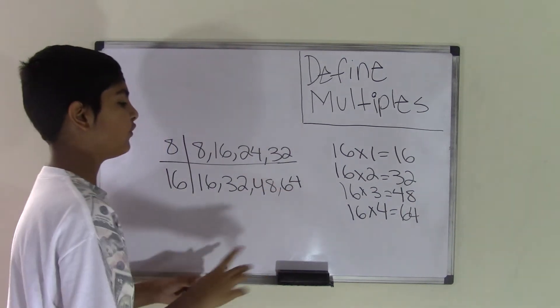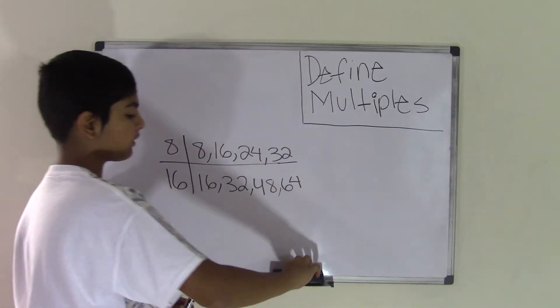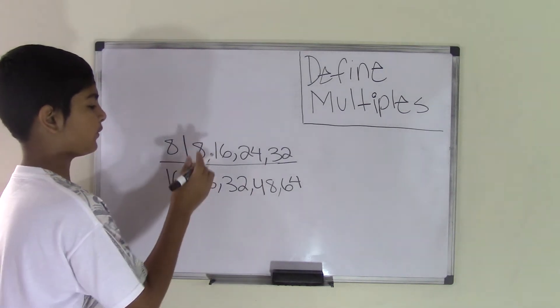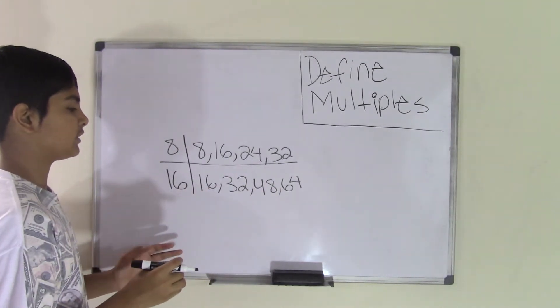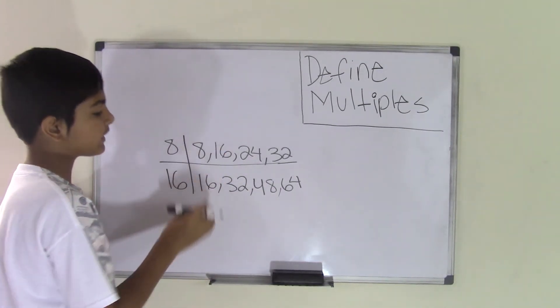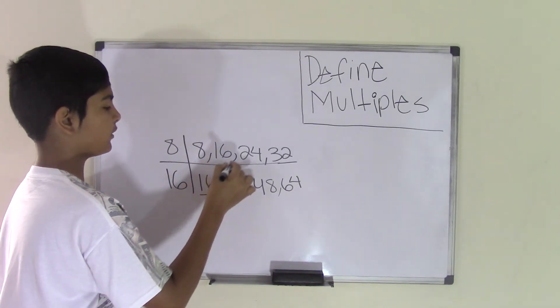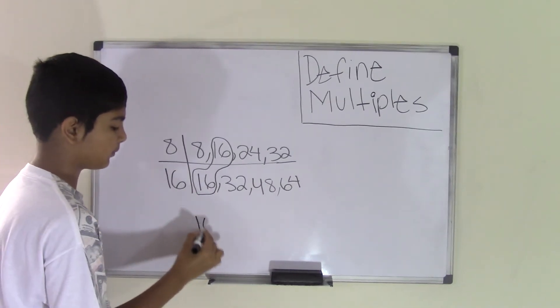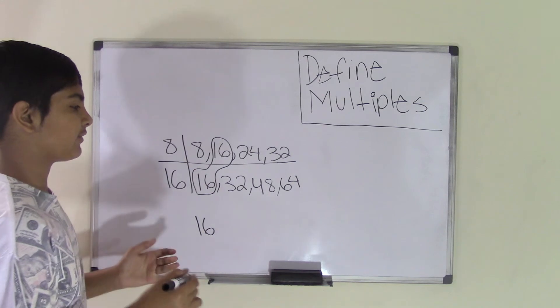So, now we've listed four multiples for each of the numbers. To find the common multiples, we have to find the common numbers. So, we start off from 8. Are there any 8s in the multiples of 16? No. Are there any 16s in the multiples of 16? Yes. So, the number 16 is a common multiple between 8 and 16. Let's find the other common multiples.